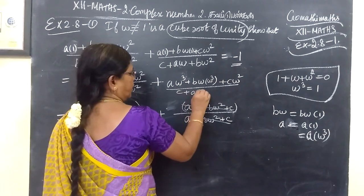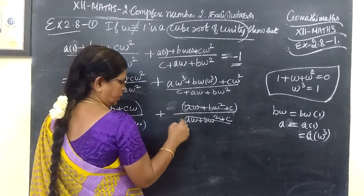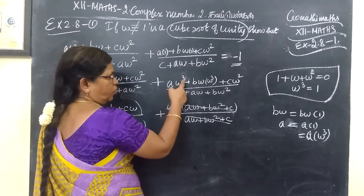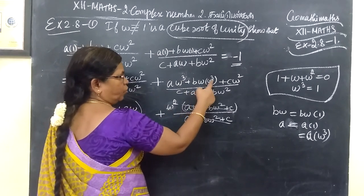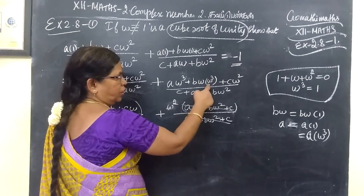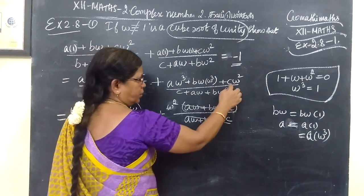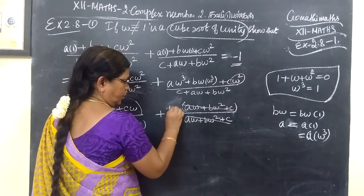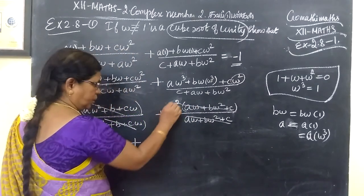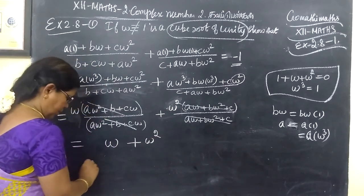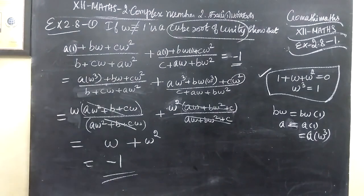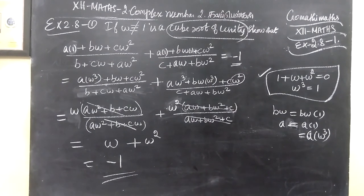We can now write c plus a·ω plus b·ω². We add ω³ here because ω times ω² becomes ω², and the ω² term equals minus 1, because using this result, 1 plus ω plus ω² equals 0, so ω² on the other side gives minus 1. So this completes the problem.